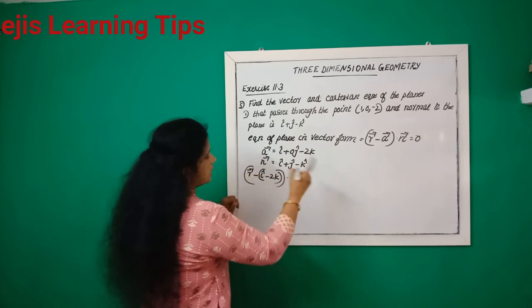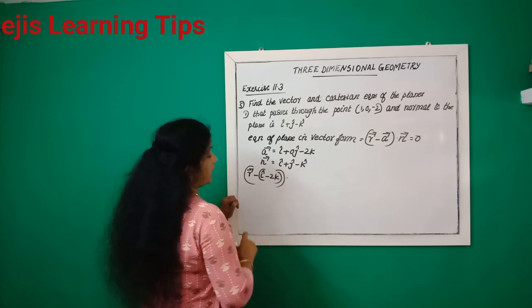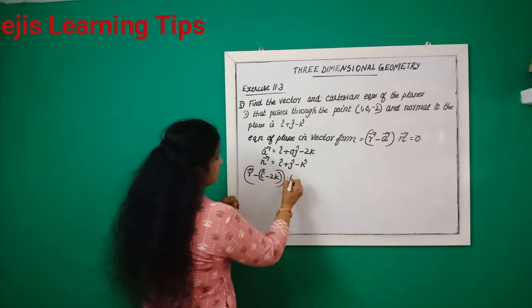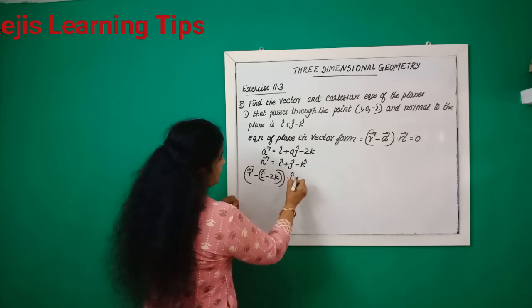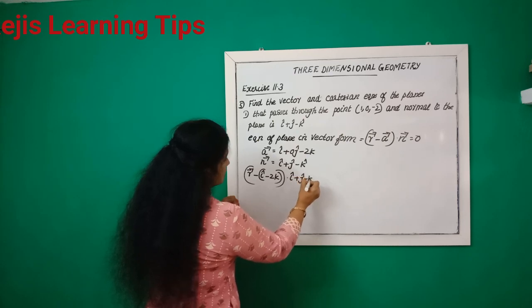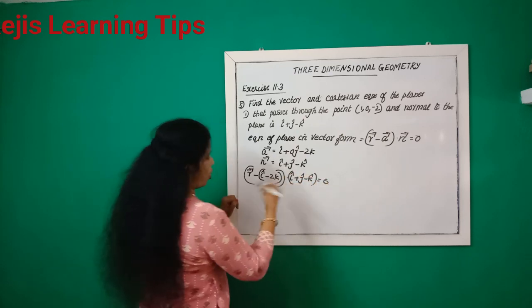Dot n vector, that is (i plus j minus k), equals zero.